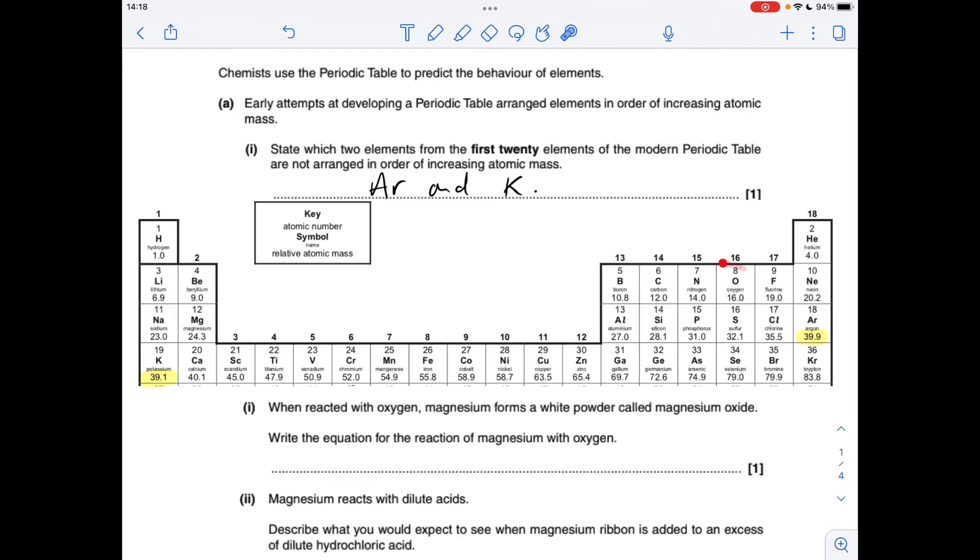Okay, so for part A I've just cut out the section of the periodic table that's relevant to this. You'll notice that argon's atomic mass is actually greater than potassium which comes after argon. So these two are not in order of increasing atomic mass from the first 20 elements.